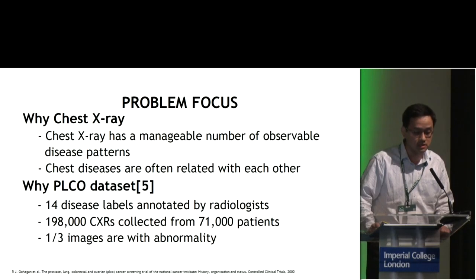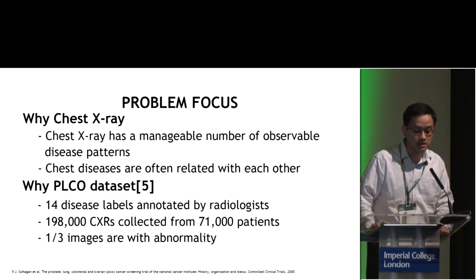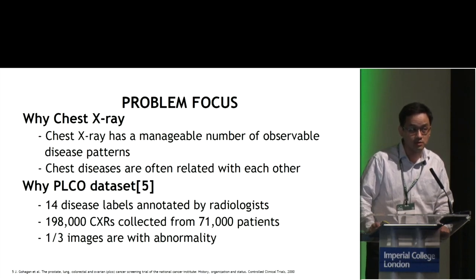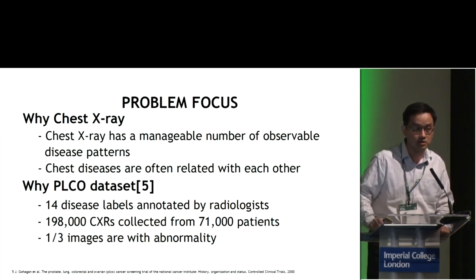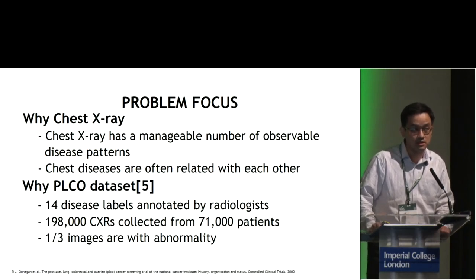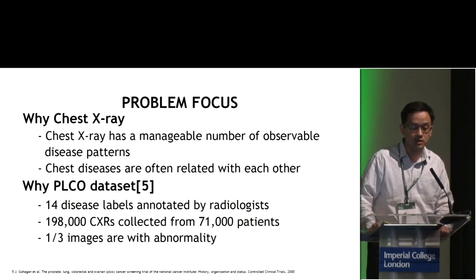Instead of starting from such a large network of hundreds or thousands of diseases, we want to start with a more tractable problem. That's why we chose the chest X-ray — it has a manageable number of observable disease patterns, and chest diseases are often related to each other. The dataset we used is called PLCO, a publicly released dataset from the National Cancer Institute of the U.S., with 14 disease labels annotated by radiologists.